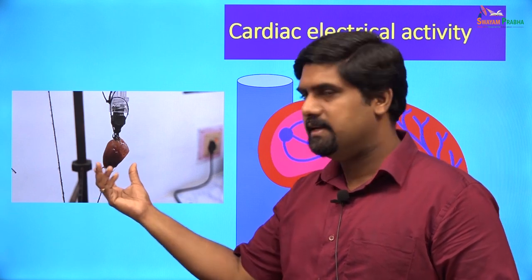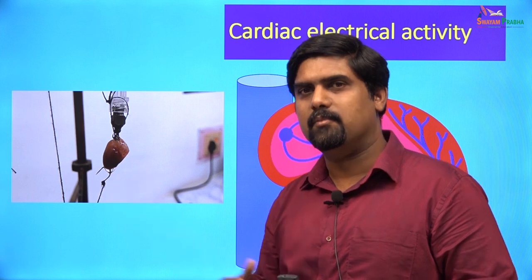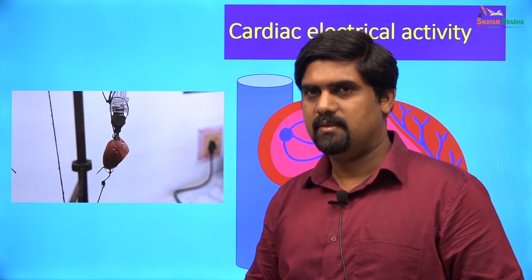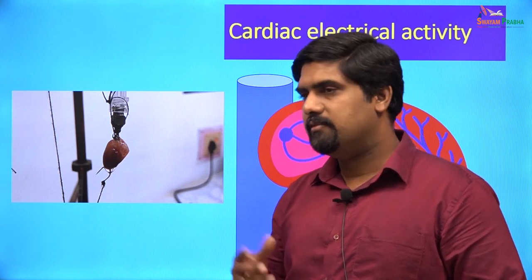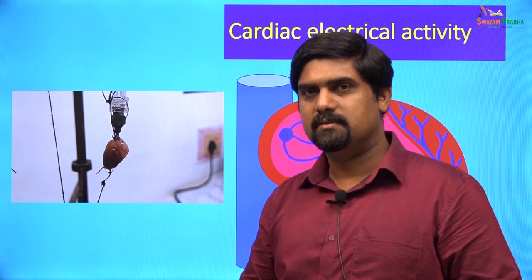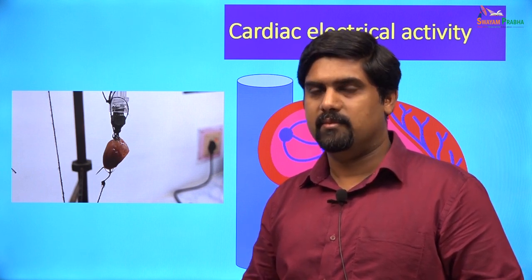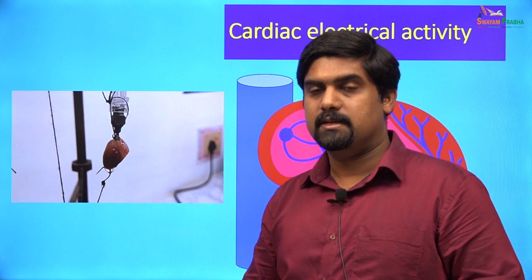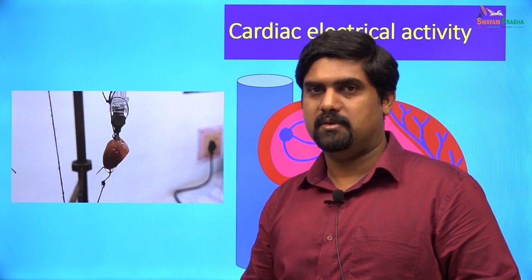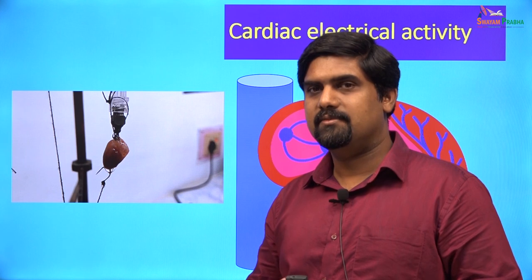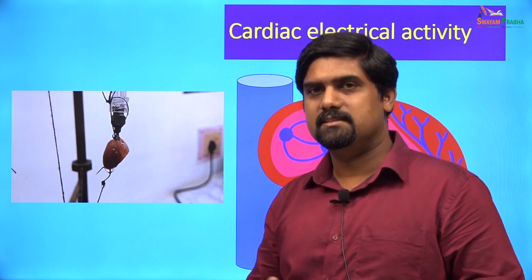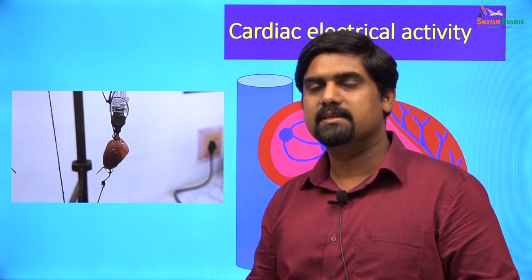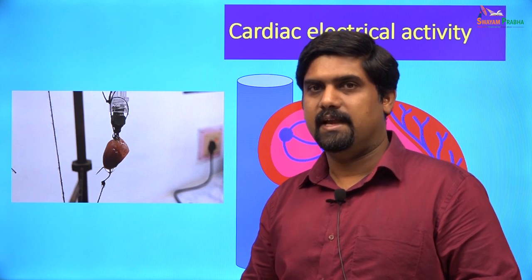This heart is completely denervated. Normally, the heart is supplied by the autonomic nervous system — the sympathetic and parasympathetic nerves. Today, we also routinely transplant hearts. These hearts are obtained from brain-dead patients, harvested, and then transplanted to patients who suffer from cardiac failure. The transplanted hearts start generating their own rhythm and begin functioning in the recipient. Again, they are denervated and beating on their own.